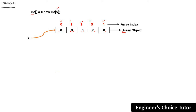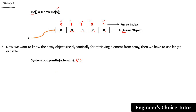My requirement is to know the array object size dynamically. For retrieving elements from an array we have to use the length variable. To know the array object size during runtime I use the length property like this: System.out.println(a.length). I will get five because we initialized the size as five.